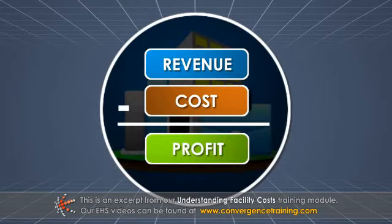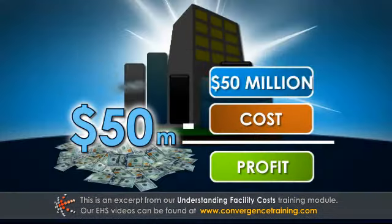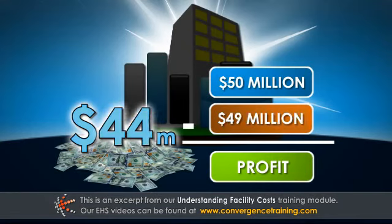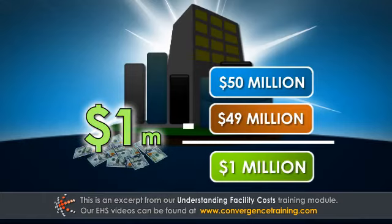Profit is the company's total revenue minus its total costs. Companies can have large revenues without having large profits. For example, a company can have $50 million in revenue in one year, but if it has $49 million in costs, it only has $1 million in profit for that year.